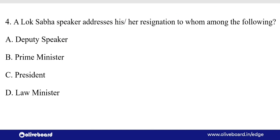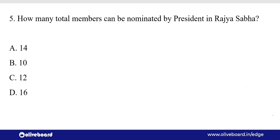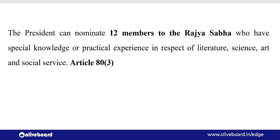यानि कि जो Lok Sabha का speaker होता है, वो अपना resign अगर देता है तो deputy speaker को देगा — don't confuse कि इसका answer president होगा, president नहीं होता। Lok Sabha का speaker, deputy Lok Sabha speaker को अपना resignation देता है। How many total members can be nominated by president in Rajya Sabha? Total of 12 members can be nominated — literature, art, science और social service के field से। Nomination का जो article है वो है Article 80, और यह nomination की प्रथा हमने ली है Ireland से।